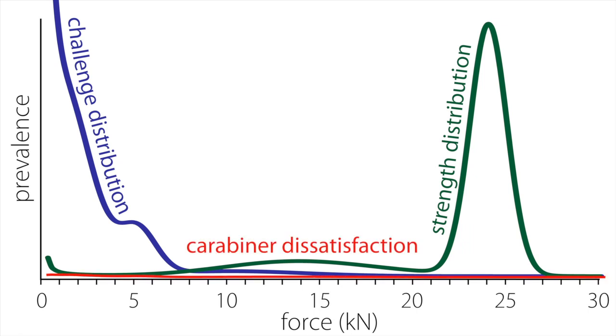The dissatisfaction is contained in the tiny red sliver of area that represents all the combinations of carabiner challenges and strengths in which the applied force is greater than the carabiner's strength.